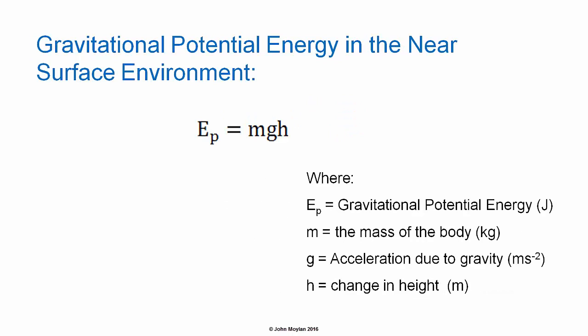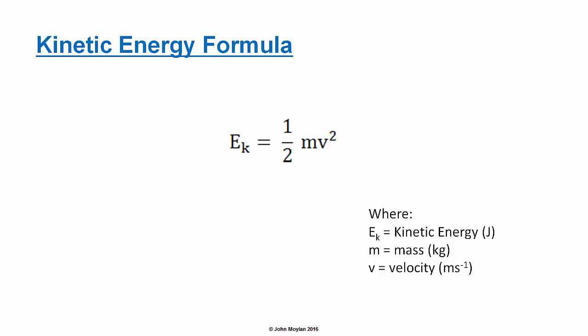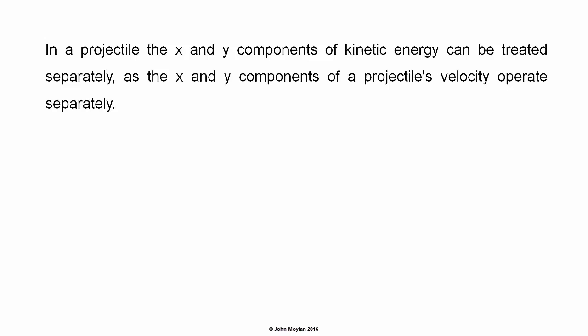In the near surface environment, the formula E subscript P equals MGH can also be used, where M is the mass of the object in kilograms, G is acceleration due to gravity, and H is the change in height in meters. The formula for kinetic energy is E subscript K equals one half Mv squared, where M is the mass of the object in kilograms, and V is the velocity in meters per second.